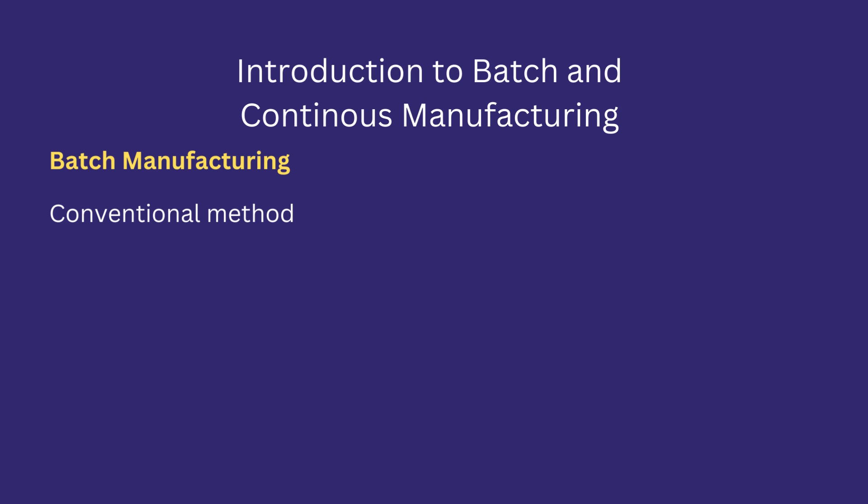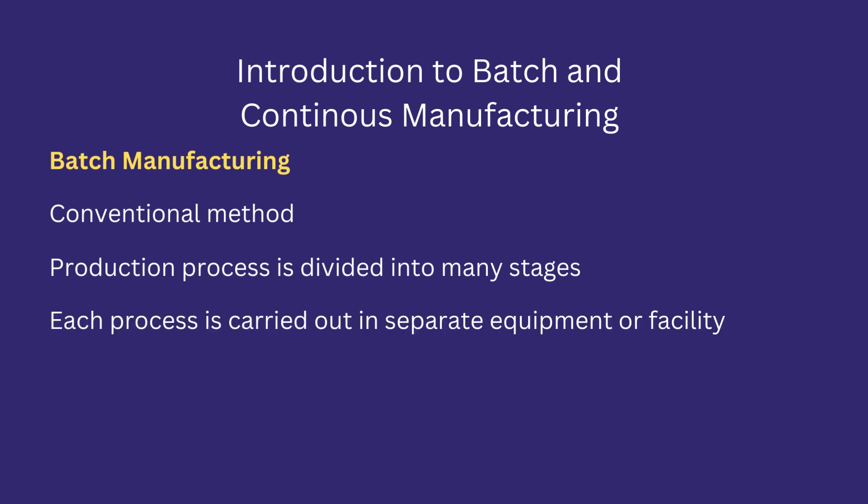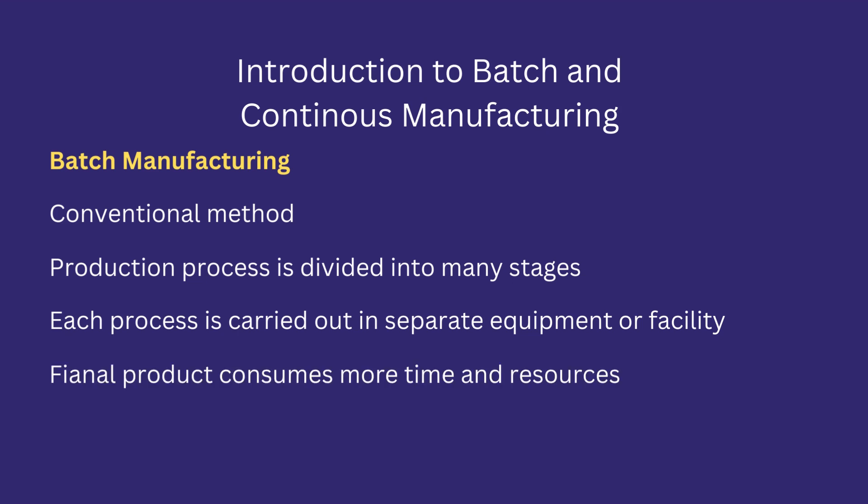Batch manufacturing is a conventional method of manufacturing a pharmaceutical product. It is commonly used in most manufacturing processes around the world. The production process is divided into many stages and each stage is dependent on the success of its preceding stage. For each stage, there are dedicated equipment and facility. Batch manufacturing can be set up and become operable with minimum resources and in less time, but the product consumes more time and resources from raw material to the final finished form.